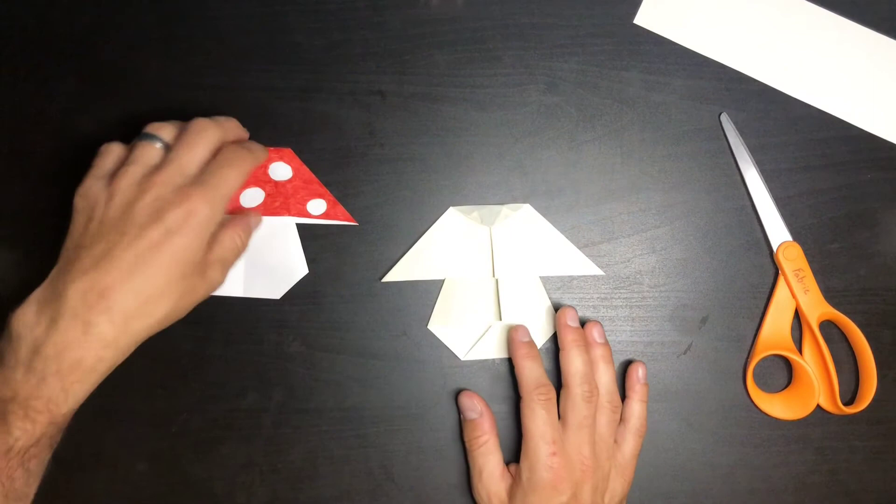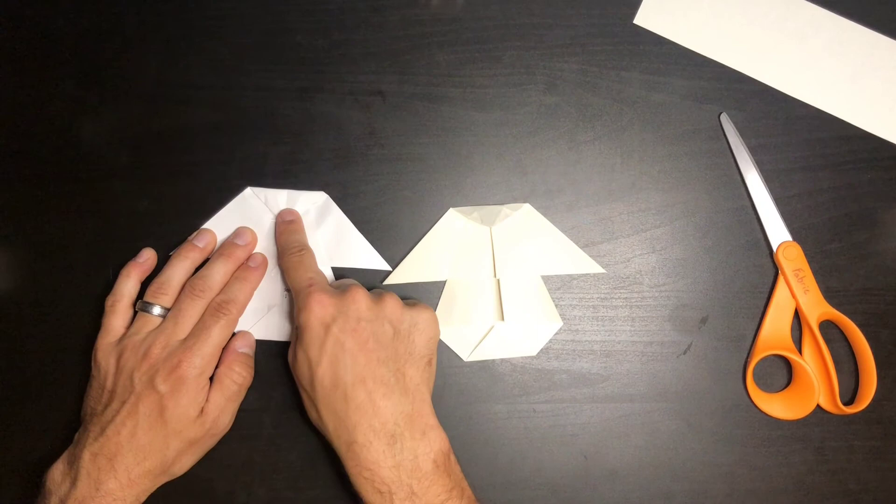What I like to do on the back side is I like to put a piece of tape or you could glue these two points here to help lay them flat.